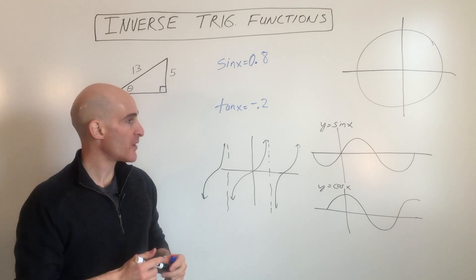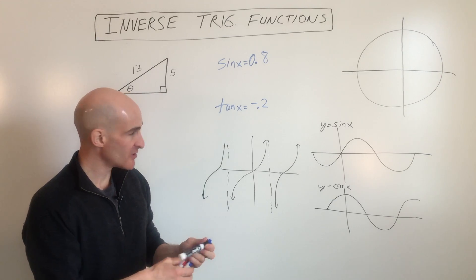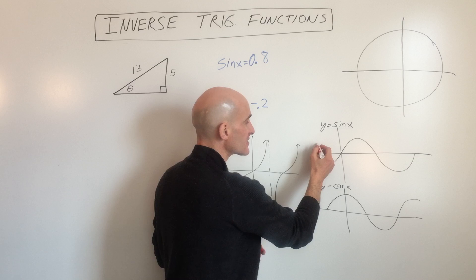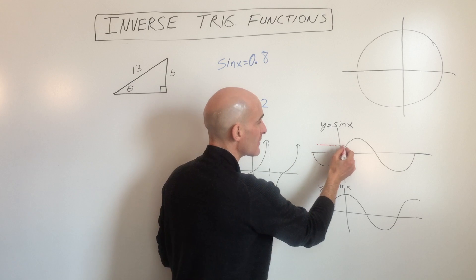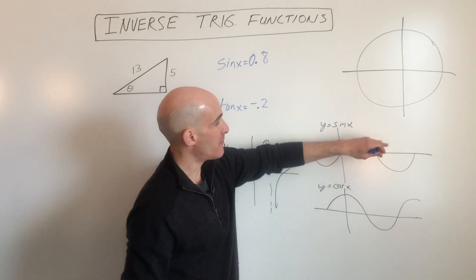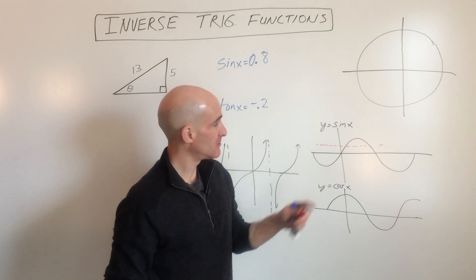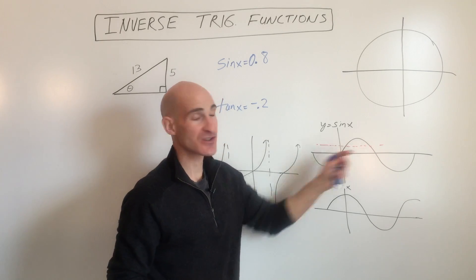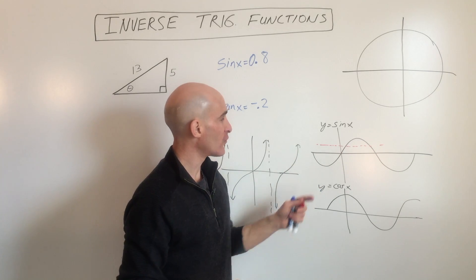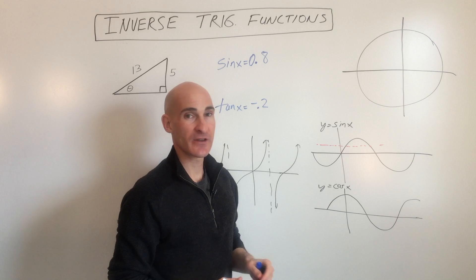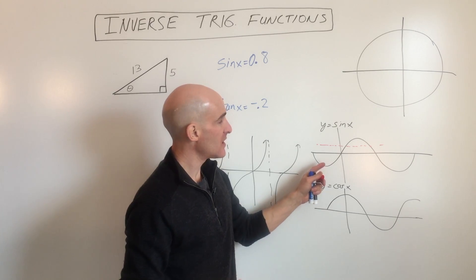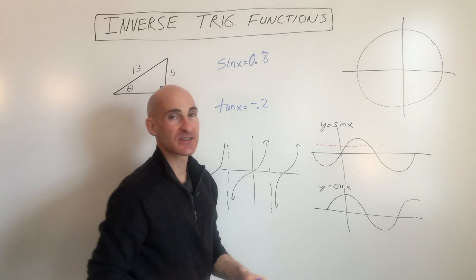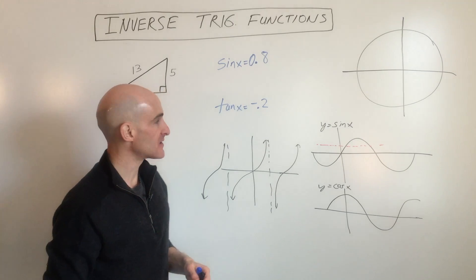The inverse is restricted to a certain domain, and the reason is because if we use our horizontal line test, it passes the graph at more than one point, which means that the inverse is not a function. So if we want the inverse to be a function, we have to restrict this domain such that it passes the horizontal line test.